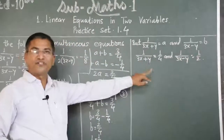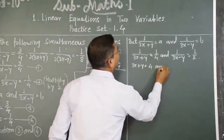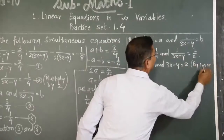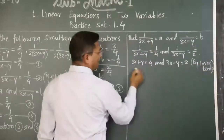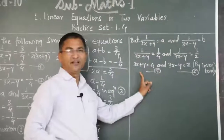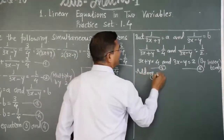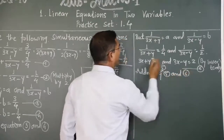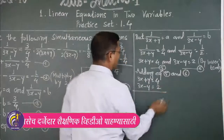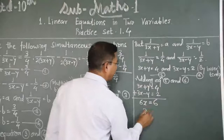This is equation five and this is equation six. The coefficients of x are equal, so we add equations five and six. Adding: 3x plus y equals 4, and 3x minus y equals 2. Therefore 3x plus 3x gives 6x, and y minus y equals 0, and 4 plus 2 equals 6. Therefore x equals 1.